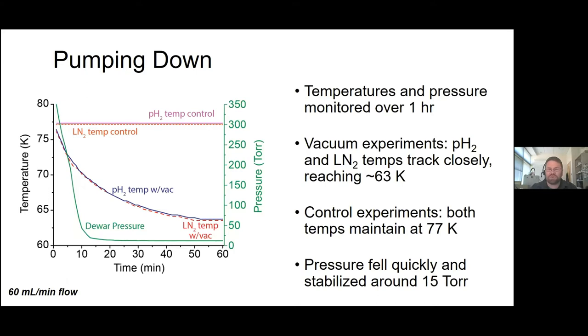We monitored this over the course of an hour for a range of different conditions. We started at atmospheric pressure and room temperature and it very quickly drops in pressure. We were able to pump down to a steady state of around 15 torr. That took about 15 to 20 minutes to get there, and it stayed pretty flat once we did. As that was happening, the temperature of our liquid nitrogen and hydrogen gas also dropped. It dropped from room temperature to 77 Kelvin, then slowly dropped down to around 63 Kelvin. The temperature of the parahydrogen gas and the liquid nitrogen tracked very well together. That's the blue and red dotted curves we see in the middle.